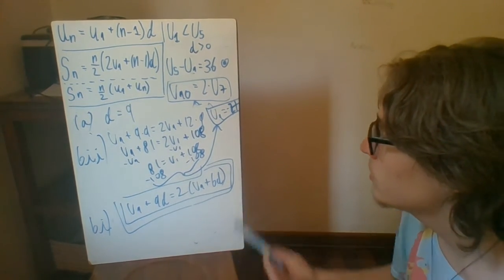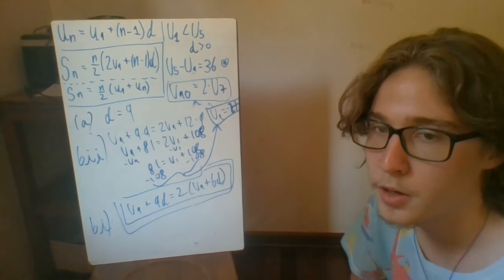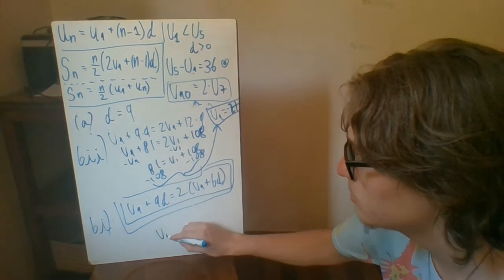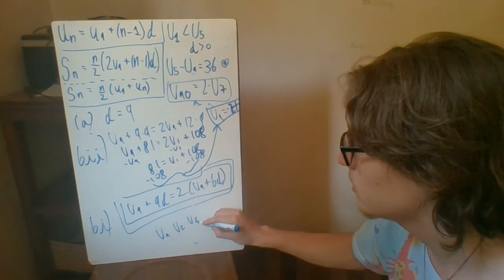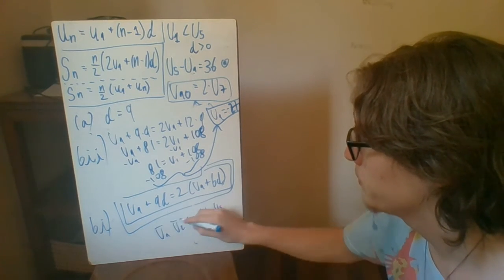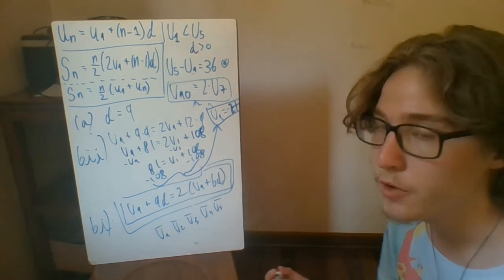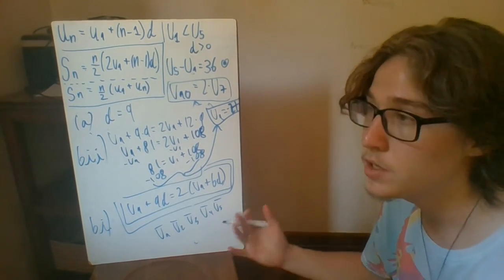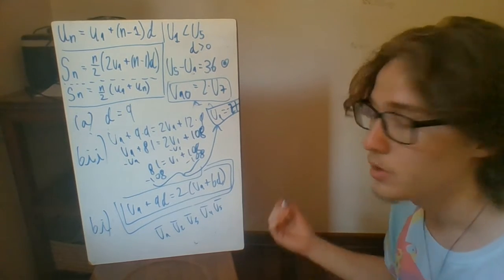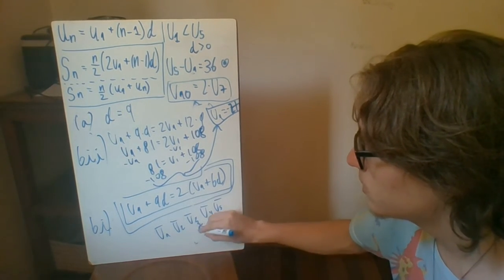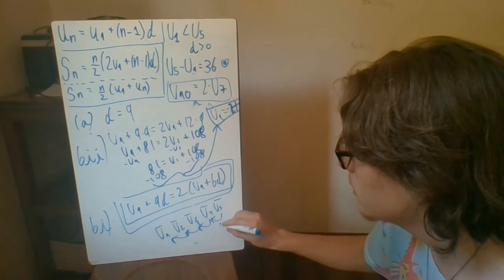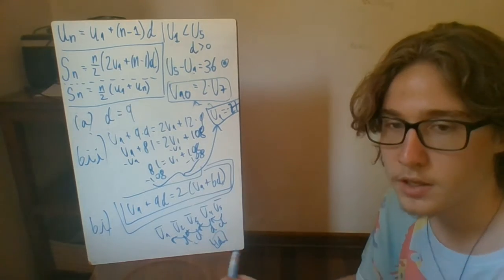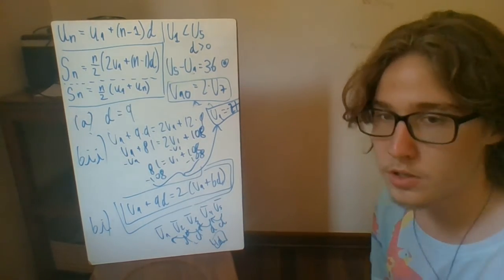So part 2 gave us that u1 is equal to negative 27. My advice for all sequences problems is that you should always try to do the diagram that you did in the beginning because it helps visualize the sequence. And that very classic mistake is saying, okay, from u5 to u1, I have to apply d five times. But no, if you put the diagram, you're going to make sure that it's always going to be one less than that. In this case, as I showed before, it was going to be 4d. But yeah, that's just a classic example. And I feel like if you use a diagram, it's much easier to avoid.